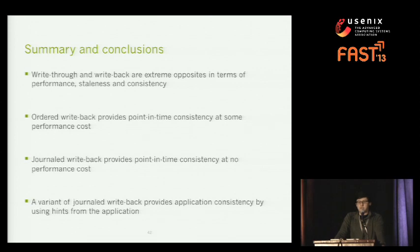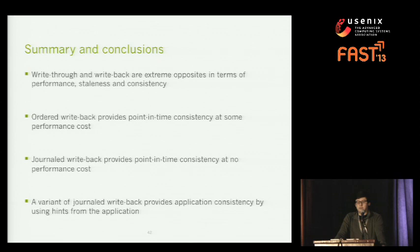In summary, in this paper we saw that there are many dimensions along which to compare write policies, and that write-back and write-through are just two extremes in the whole possible range. We proposed three new write-back policies: ordered write-back, which provides point-in-time consistency at some performance reduction; journaled write-back, which has almost no performance reduction but requires modifying the network storage to provide atomic group writes; and finally, application consistency can be provided by modifying journaled write-back to accept application hints.